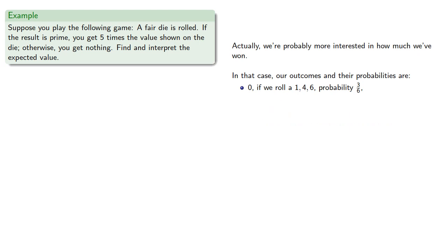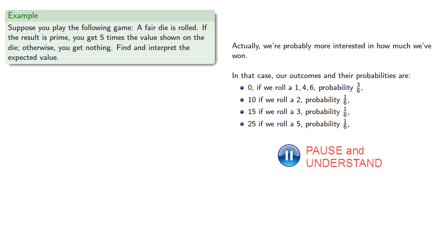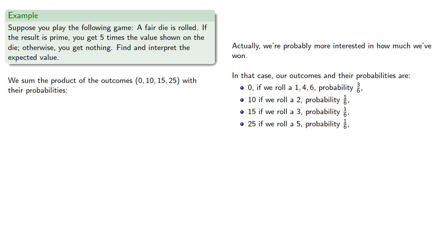If we roll a two, we get 10, and that occurs with probability one sixth. We get 15 if we roll a three, probability one sixth. And 25 if we roll a five, probability one sixth. So again, we sum the product of the outcomes with their probabilities.